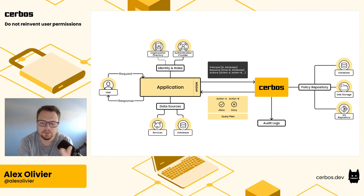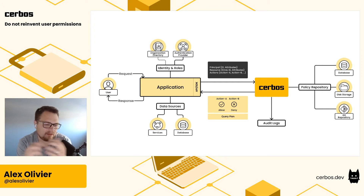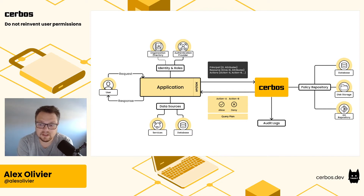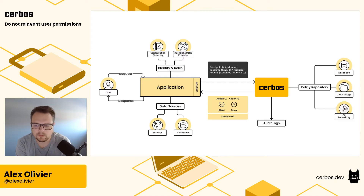Inside that Cerbos instance, it receives the principal, the resource, and the actions. Based on the policies defined, it makes a decision on whether the action or actions should be allowed or not, and returns a very simple response back to your application — either an allow or deny for a particular request. In your app code you then have a very simple if/else block: if allowed, perform the action; if denied, return an error to the user. So your code, which was a big if/else case/switch statement, is now a very simple check: is this action allowed or not? And wherever in your codebase you're making authorization checks, it's that same interface — principal, resource, actions, get back allow or deny.